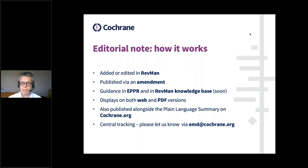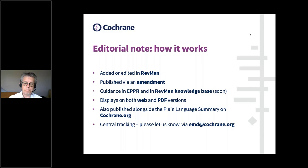It's all done in RevMan and published as an amendment — that's RevMan 5 or RevMan Web — using standard processes and the published notes section. There's guidance on this in the ePPR and in the RevMan knowledge base. It displays on both the web HTML and PDF versions of the review, and it's also published alongside the plain language summary on Cochrane.org. Please let us know if you are interested in publishing an editorial note or have published one already.